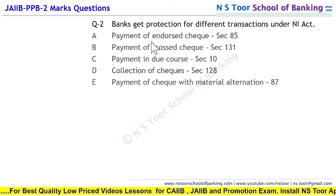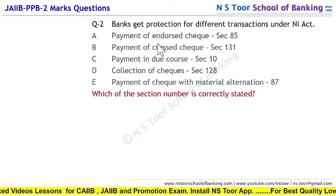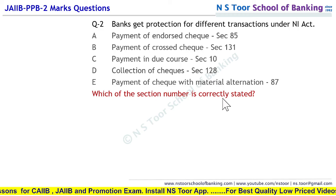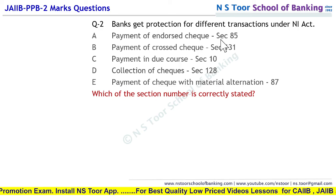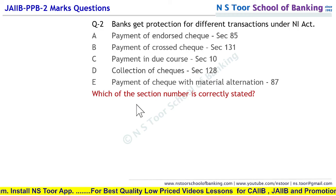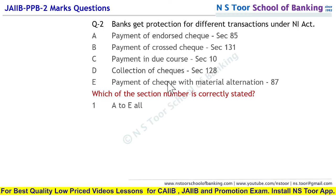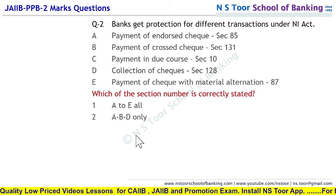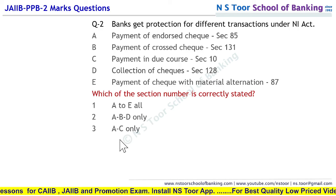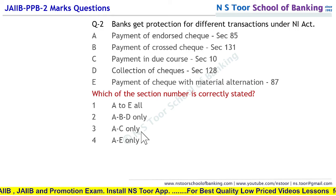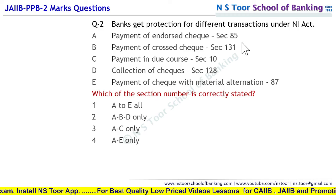In mein ho sakta hai kuch statements correct hon, kuch correct na hon. Humne section numbers jo correctly stated hain — yaani jo statement diya, uske saath jo section diya hai, whether wo correct hai ke nahi — wo find out karna hai. So, which of the section numbers is correctly stated? Options hain: A to E sab sahi hain; A, B, D only; A, B, C only; A, C only; ya A, E only.